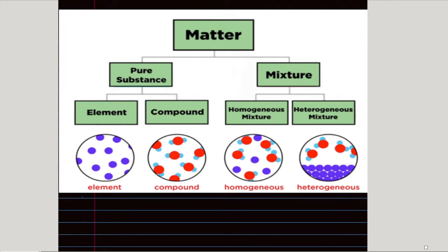Let's begin with the definition of matter. Matter is any substance which has mass and occupies space. Matter can be classified into pure substances, elements, compounds and mixtures. An element is a pure substance which cannot be further broken down into simpler substances. Elements are classified into metals and non-metals.